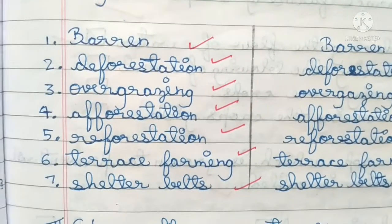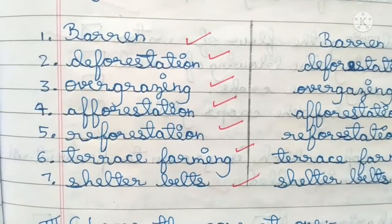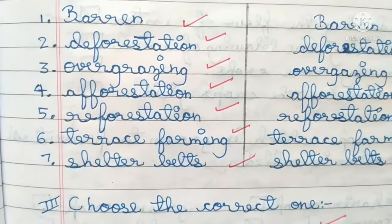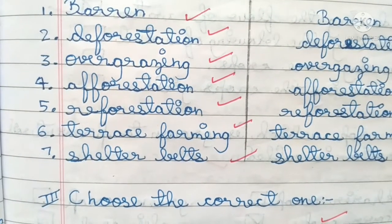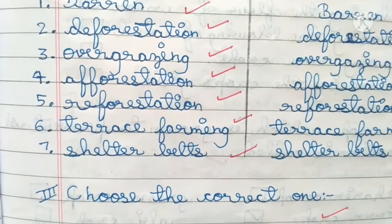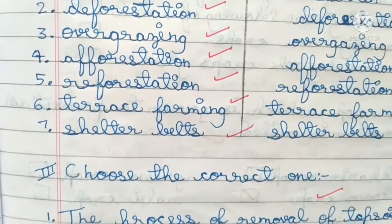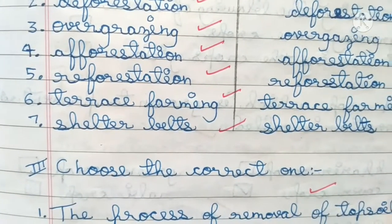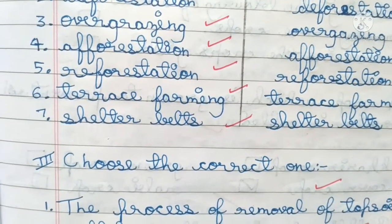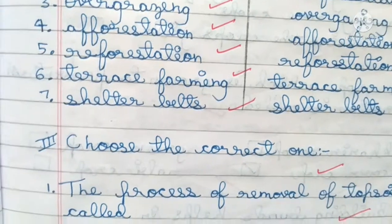Keywords: Barren. Deforestation. Overgrazing. Afforestation. Reforestation. Terrace forming. Shelter belts.